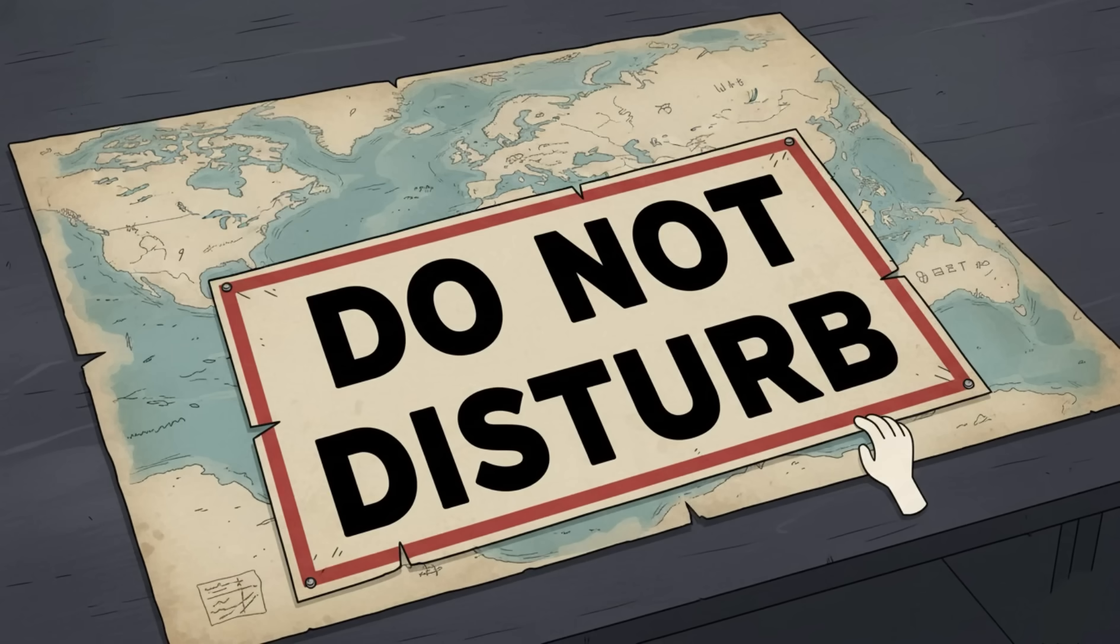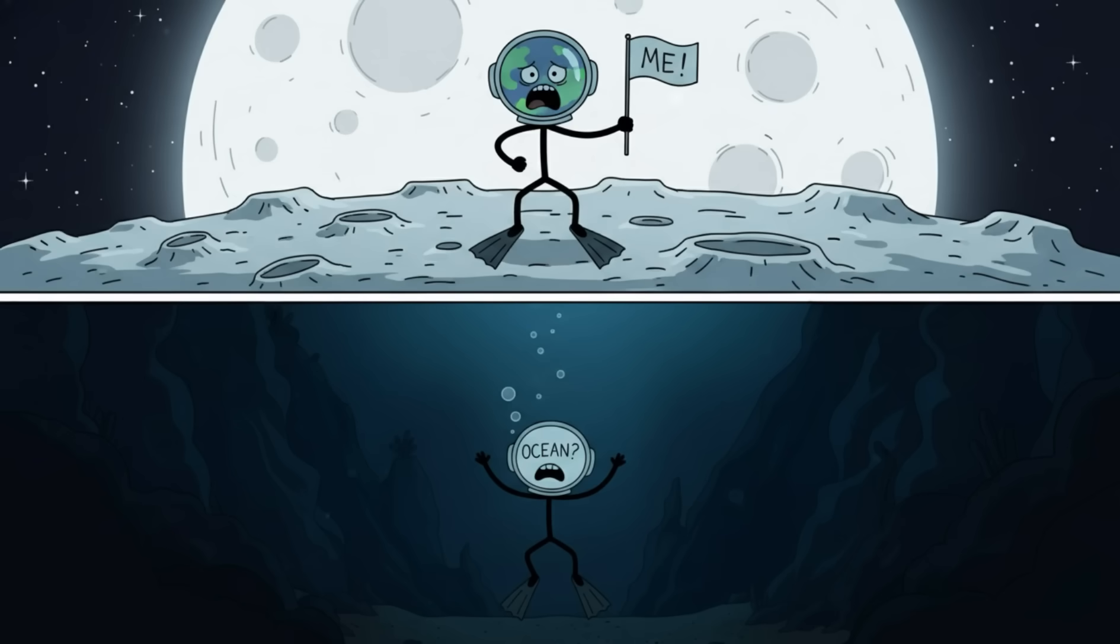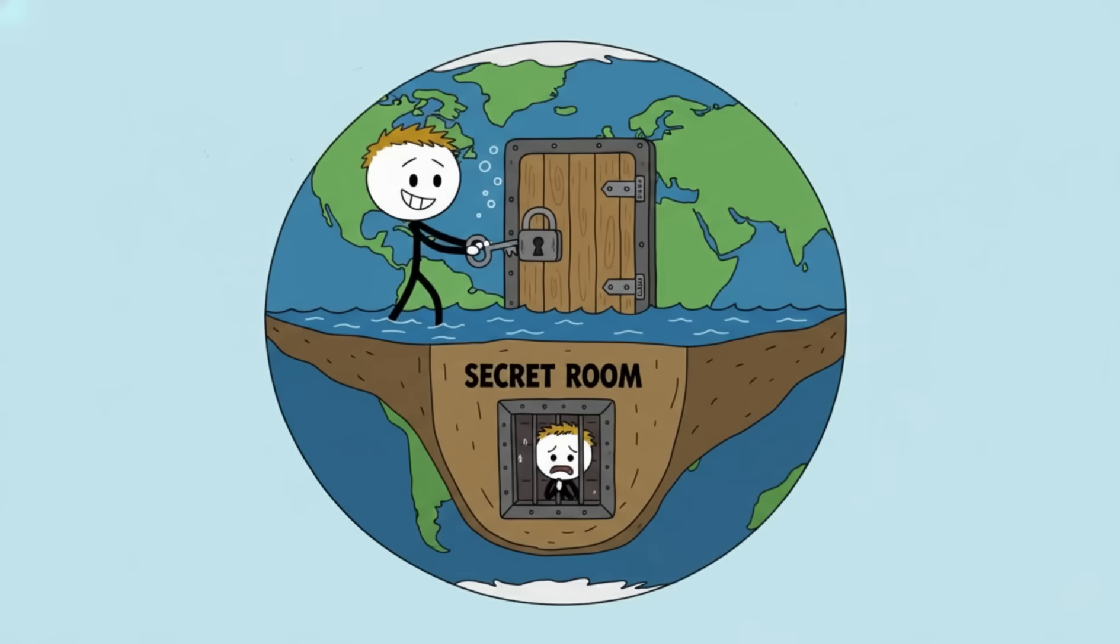The deep sea is Earth's final do not disturb setting. More than 80% of it remains unmapped, unseen, and totally unbothered by human curiosity, which means we've explored more of the moon, an actual rock in space, than the ocean we live on top of. The planet is essentially hiding its weirdest secrets right under our feet, like a petty roommate who keeps locking their bedroom door.